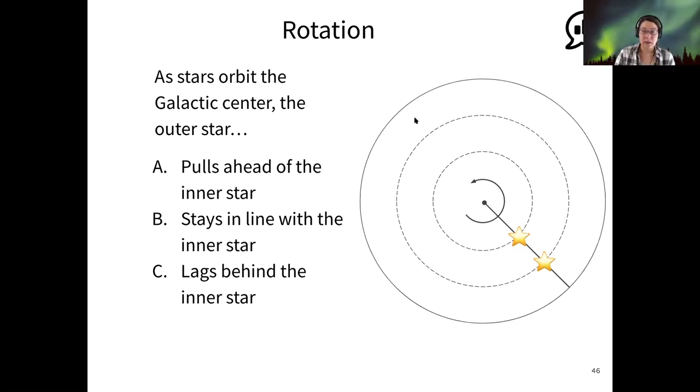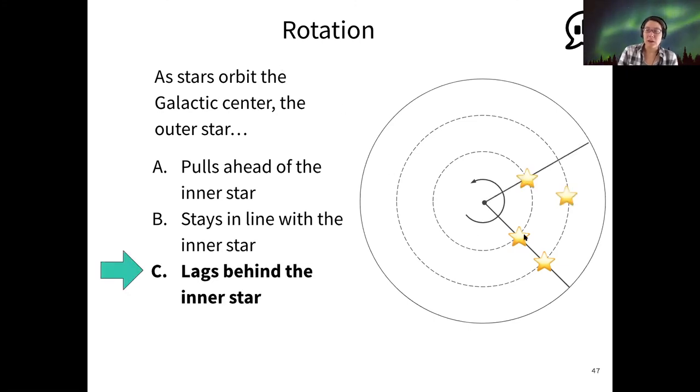So I see a majority, not a hundred percent, but a majority of votes for C that that outer star is actually going to lag behind the inner star. And that's exactly right. So what this means is that stars near the center of the galaxy, they're orbiting faster and stars that are orbiting farther from galactic center are orbiting slower. This is just a consequence of gravity and orbits, which we'll talk about next week. But what it means is that the galaxy is not a rigid body. It's not like all the stars are painted on the surface of a Frisbee and you could toss that Frisbee and they would stay aligned with each other as the Frisbee rotated. It's not like that. Instead, all of the stars and the gas is orbiting around galactic center. And so they don't stay aligned with each other as they rotate around. So outer stars lag behind and move slower.